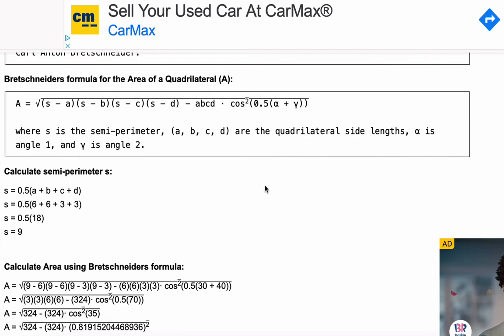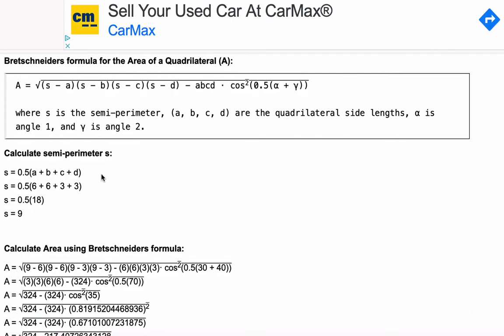So once you have the definition and the formula, we're going to walk through the pieces of the calculation. Semi-perimeter is just one-half times the sum of the four sides: A, B, C, and D.